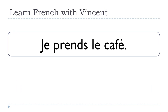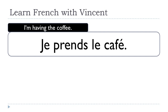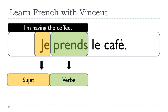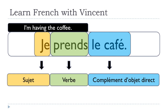Let's take a simple sentence: JE PRENDS LE CAFÉ — in English, I'm having THE coffee. JE is clearly the subject, le sujet. PRENDS is the verb, le verbe. LE CAFÉ is what we call the COMPLÉMENT D'OBJET DIRECT. You can find the COD in a sentence by reusing the subject and verb and asking QUOI — WHAT — at the end: JE PRENDS QUOI? The answer you get is the COMPLÉMENT D'OBJET DIRECT.